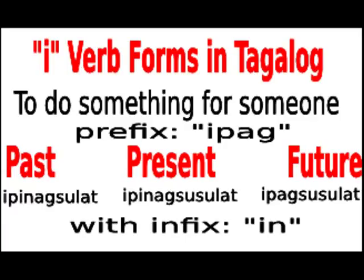Third sentence pattern: when the um and mag verbs have similar meanings, the E-verb follows the first sentence pattern. Example: Bumasa ng aklat ang guro para sa bata. Nagbasa ng aklat ang guro para sa bata. Ibinasa ng aklat ng guro ang bata. The teacher read the book to the child.